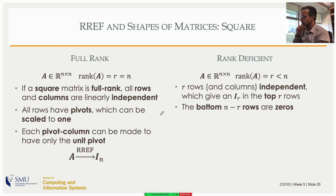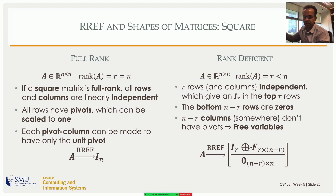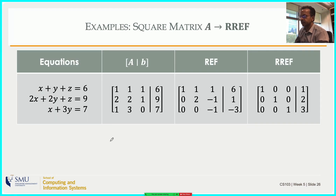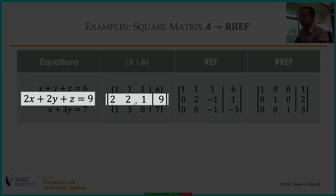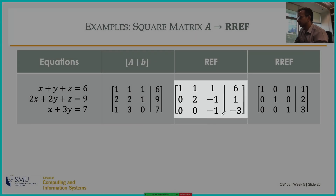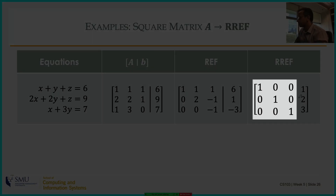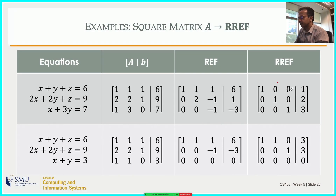In the RREF of a rank-deficient square matrix, the top r rows form an identity-like structure Ir, while the bottom n - r rows are all zeros. As a full-rank example: x + y + z = 6, 2x + 2y + z = 9, x + 3y + 0z = 7. After Gaussian elimination and Gauss-Jordan, the coefficient part becomes the identity matrix with solution [1, 2, 3].